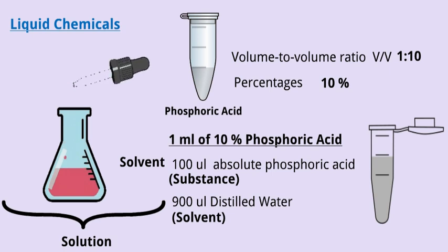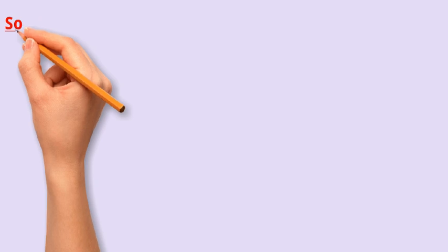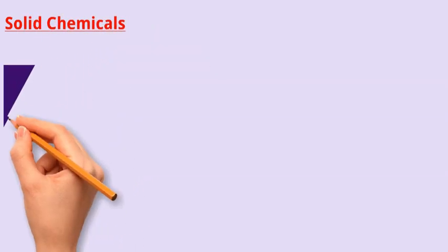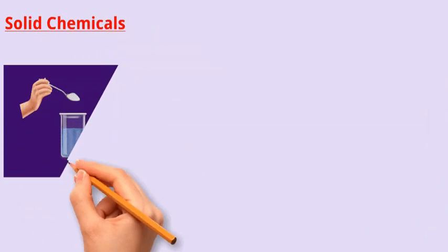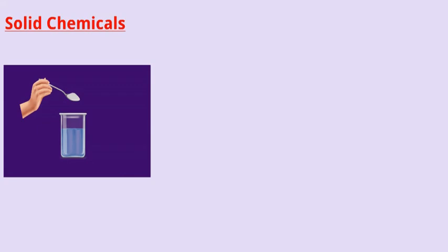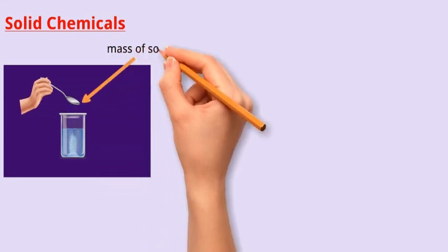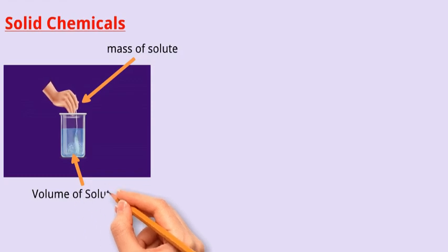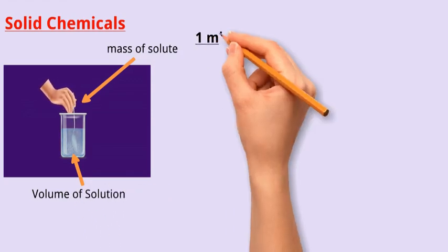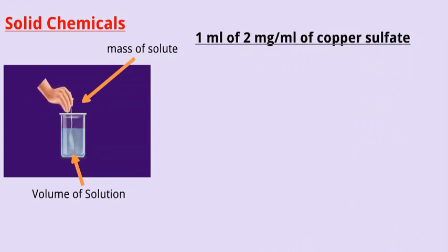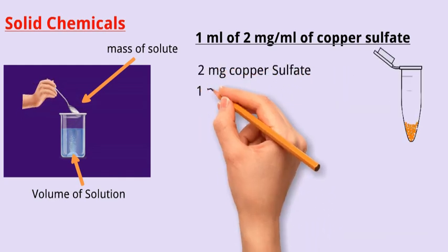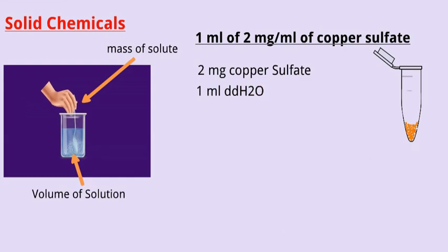But when we deal with solid chemicals, here we dissolve a solid powder or crystal chemical in a liquid solvent. In this case, we consider the mass of the solute in relation to the volume of the solution. So if you were asked to prepare 1 ml of 2 mg per ml of copper sulfate, weigh 2 mg by using an electronic balance and then add 1 ml of your solvent, in this case distilled water.